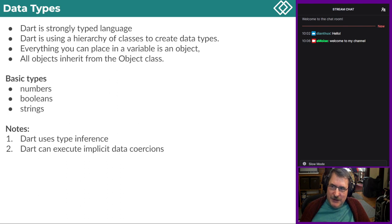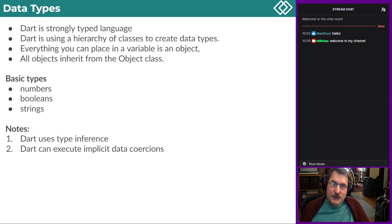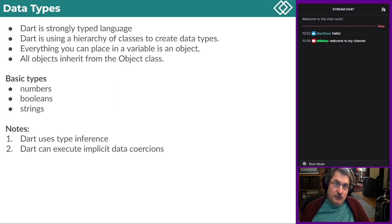Let's talk about data types. First of all, Dart is a strongly typed language. That means you define a variable with a type and you cannot change the type later — the variable has the same type all the time. If you try to use the variable wrong, you get a compilation error. That's what strongly typed means. In dynamic languages, the type of a variable can be changed, and I don't like that. Dart being strongly typed eliminates possible errors.